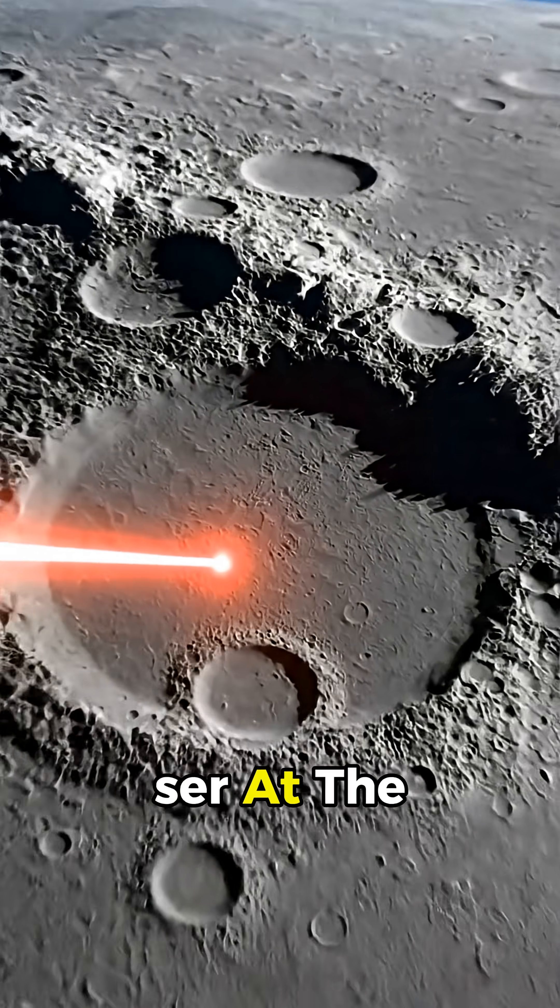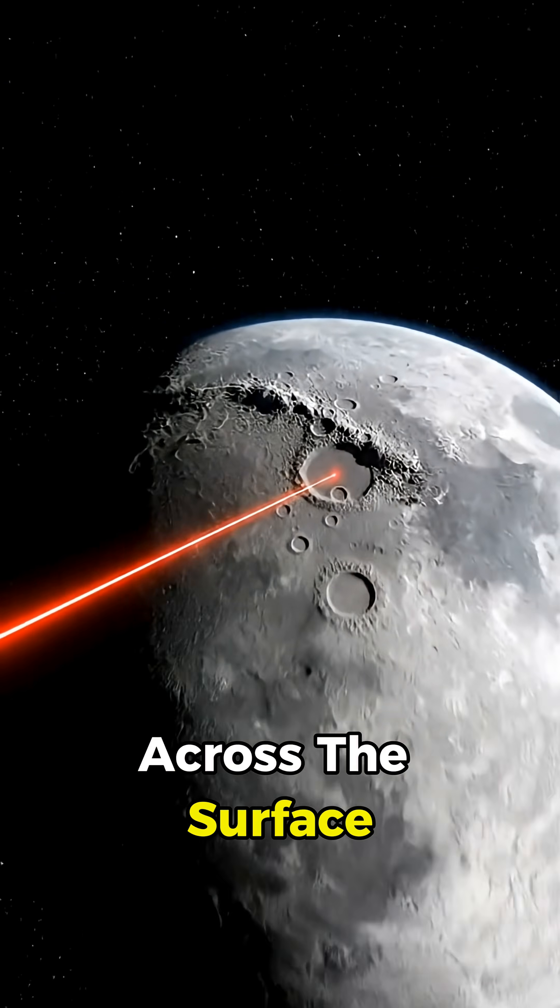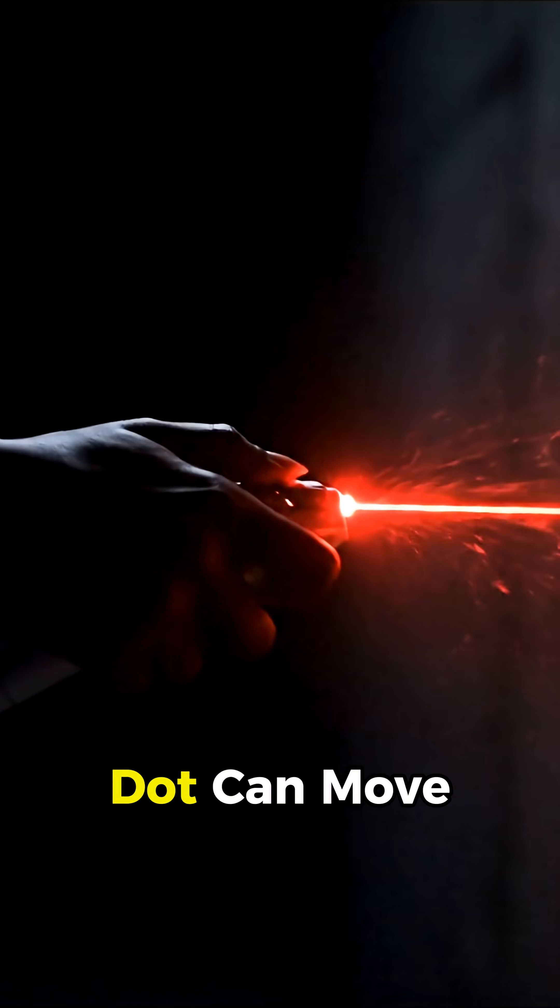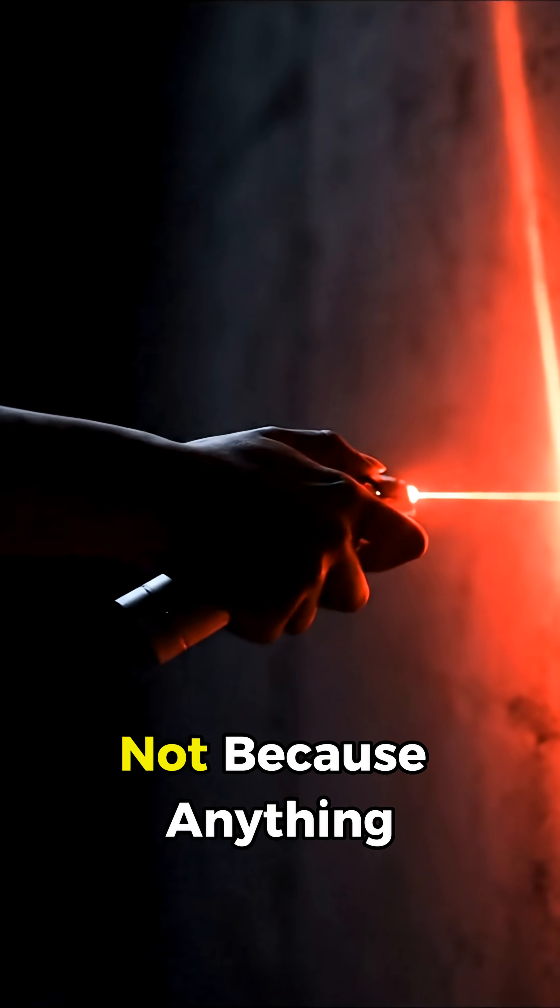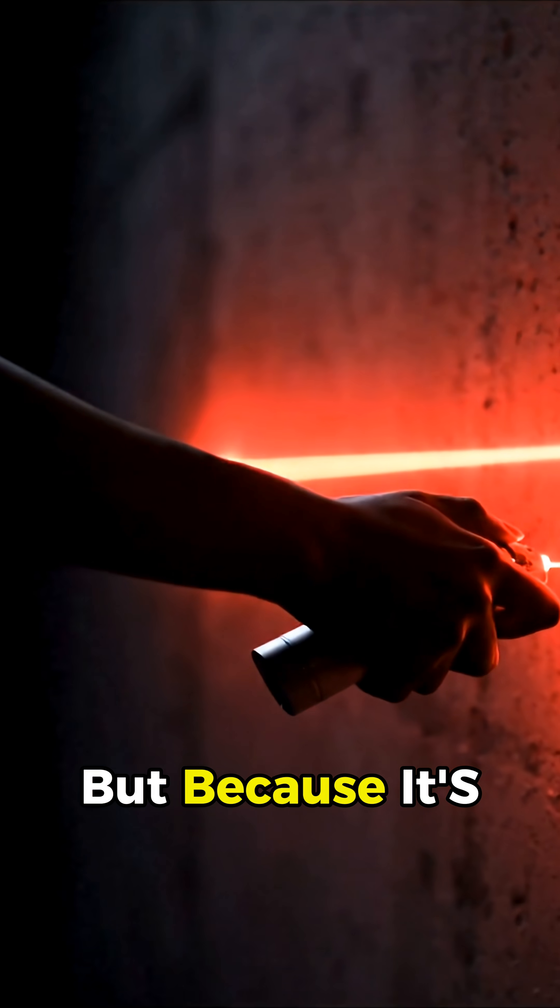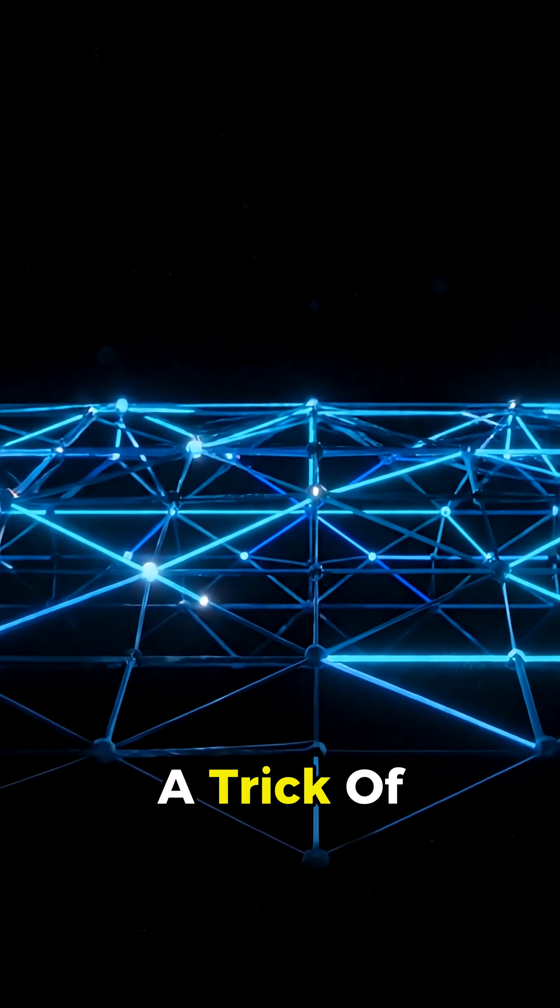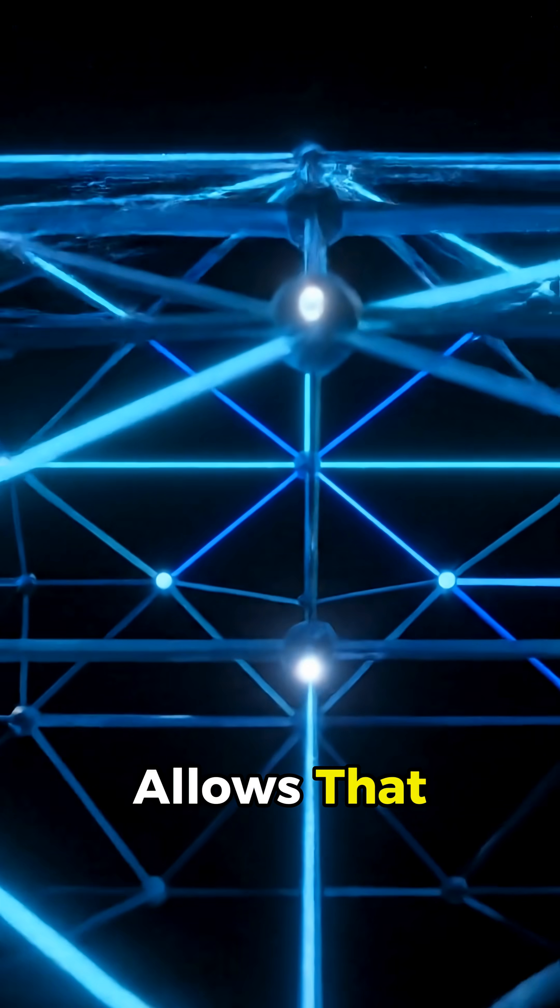Imagine pointing a laser at the moon and sweeping it across the surface. Click. That bright dot can move faster than light. Not because anything physical is zooming that fast, but because it's just a moving spot—a trick of geometry, and physics allows that.